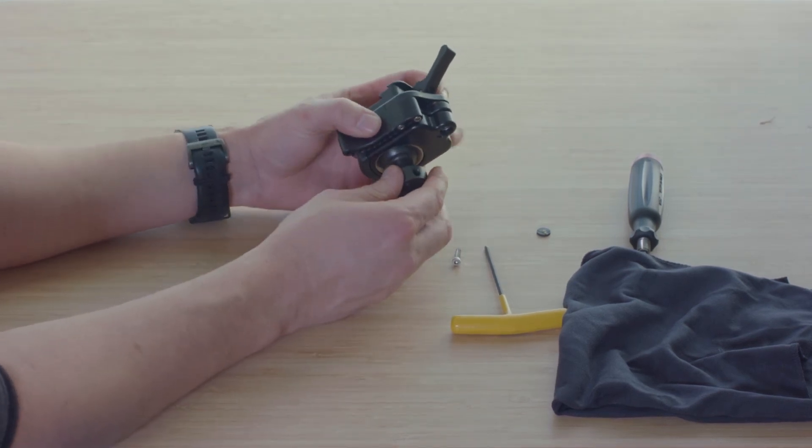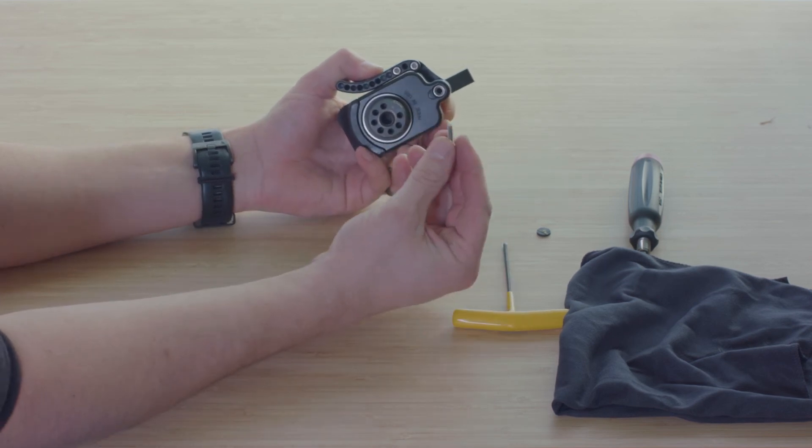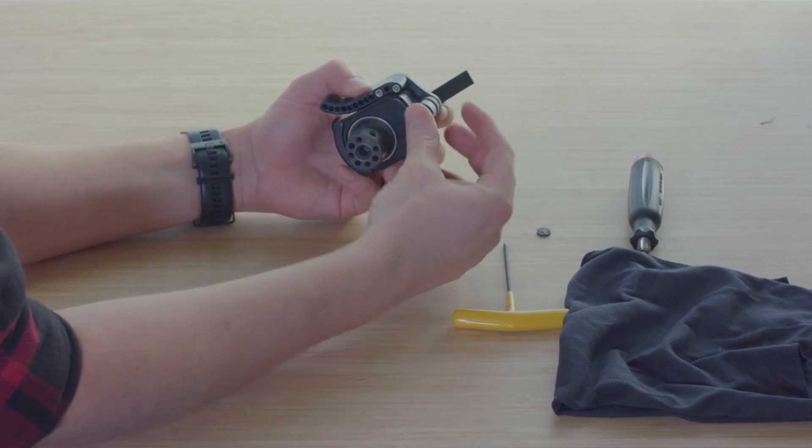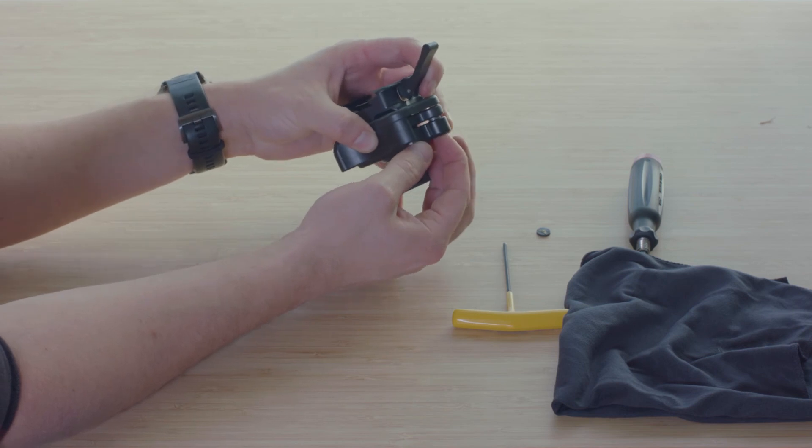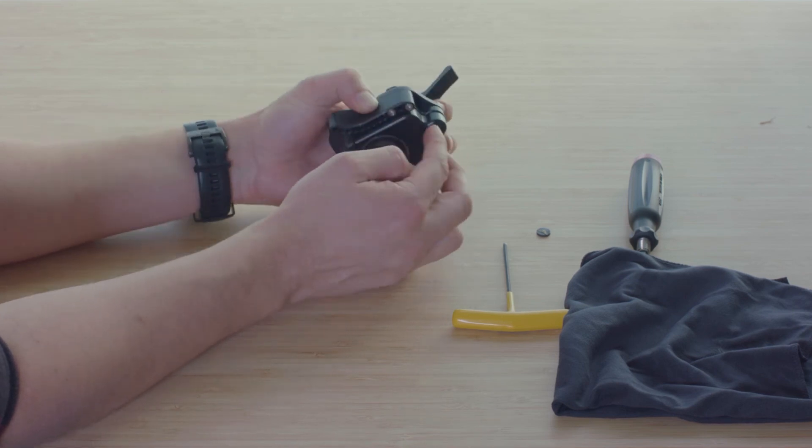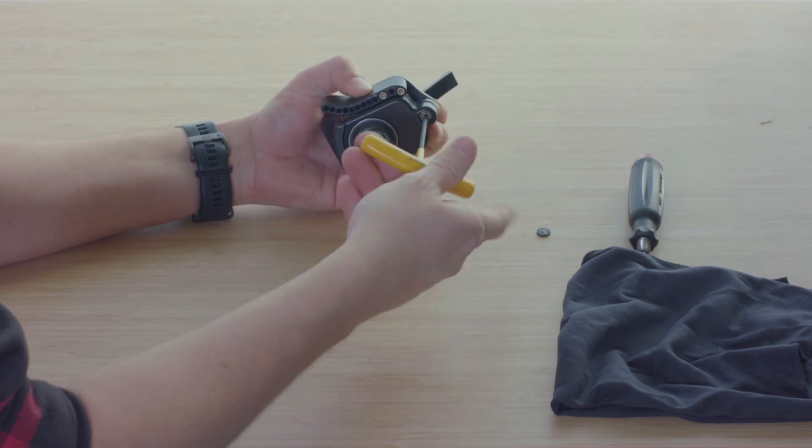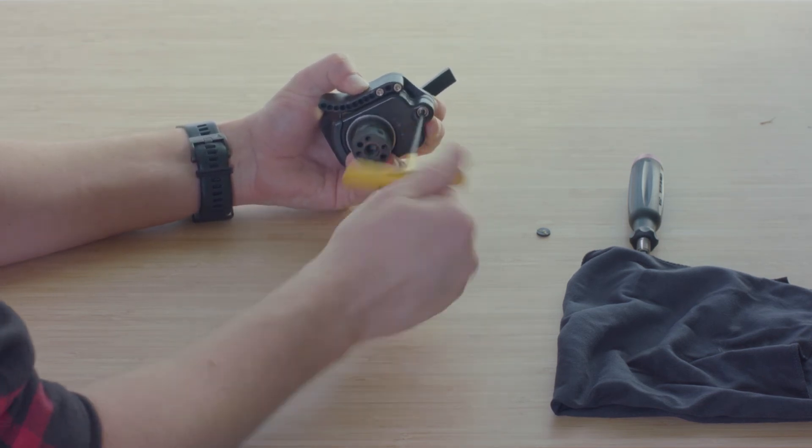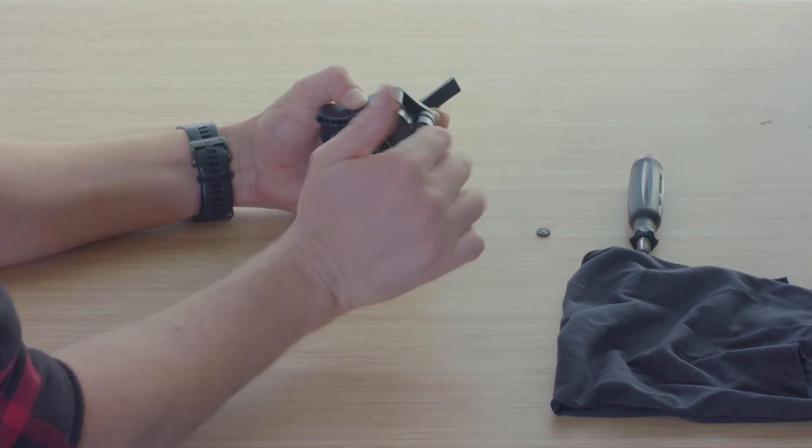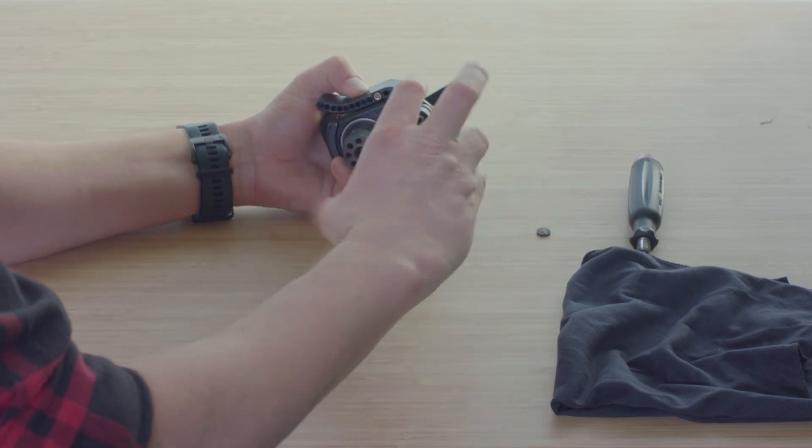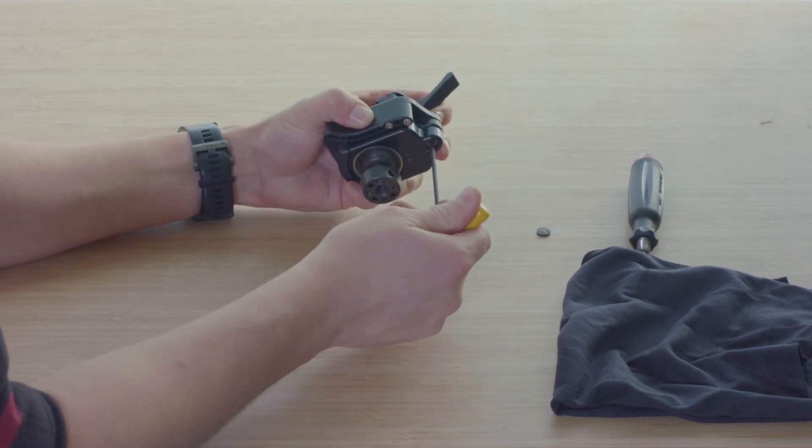Once it's in that fully shut position, take that screw, the very first one that you took out, put it back in while holding it, pushing down with your index finger on the lever. Tighten it finger tight.